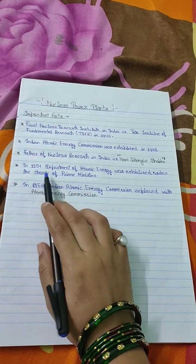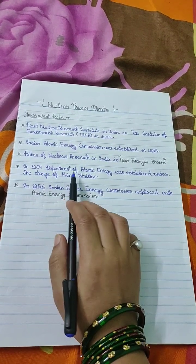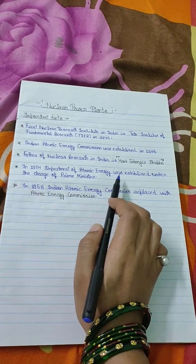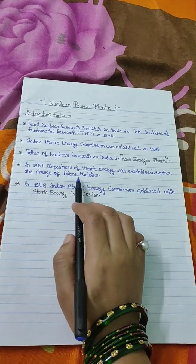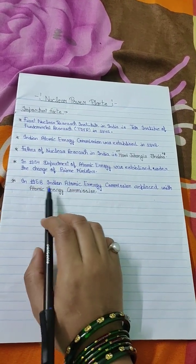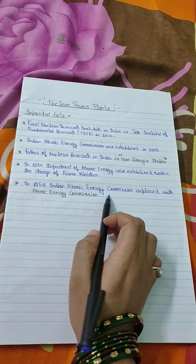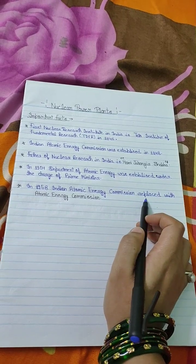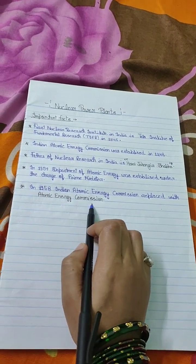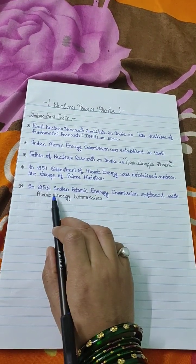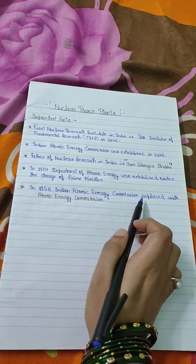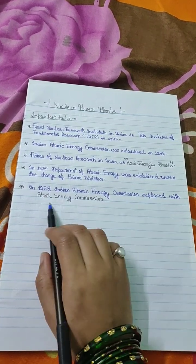In 1954, the Department of Atomic Energy was placed under the charge of the Prime Minister. In 1958, the Indian Atomic Energy Commission was replaced with the Atomic Energy Commission — that is, in 1958 the Indian Atomic Energy Commission's name was changed to Atomic Energy Commission.